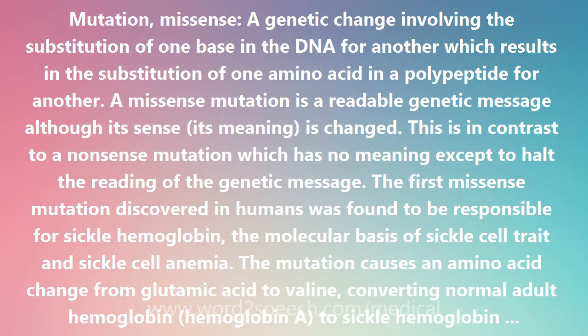Sickle hemoglobin is the molecular basis of sickle cell trait and sickle cell anemia. The mutation causes an amino acid change from glutamic acid to valine, converting normal adult hemoglobin (hemoglobin A) to sickle hemoglobin (hemoglobin S).